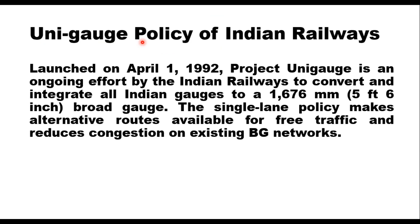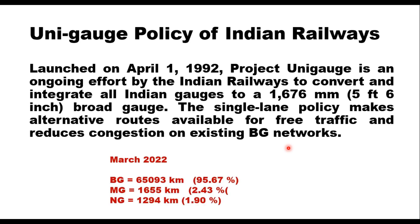Considering these problems of the multi-gauge system, the Government of India launched Project Unigauge on April 1, 1992. This is an ongoing effort by Indian Railways to convert and integrate all Indian gauges to the standard 1676 millimeter, that is 5 feet 6 inch broad gauge. The single gauge policy makes alternative routes available for free traffic flow and reduces congestion on the existing broad gauge network. As of March 2022, 95.67% of the total track length is broad gauge, meter gauge is 2.43%, and narrow gauge is only 1.9%.